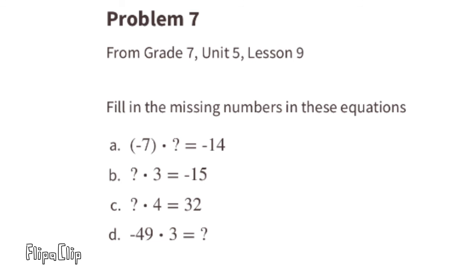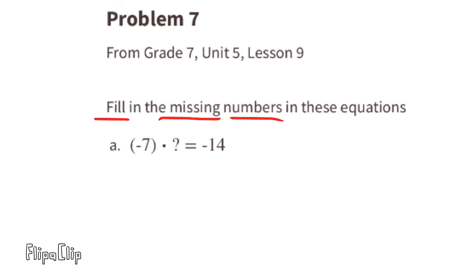Problem number 7 from 7th grade Unit 5 Lesson 9: fill in the missing numbers in these equations. Part A: negative 7 times what number equals negative 14? Since 7 times 2 equals 14, and a negative times a positive equals a negative, the answer is positive 2. So negative 7 times positive 2 equals negative 14.